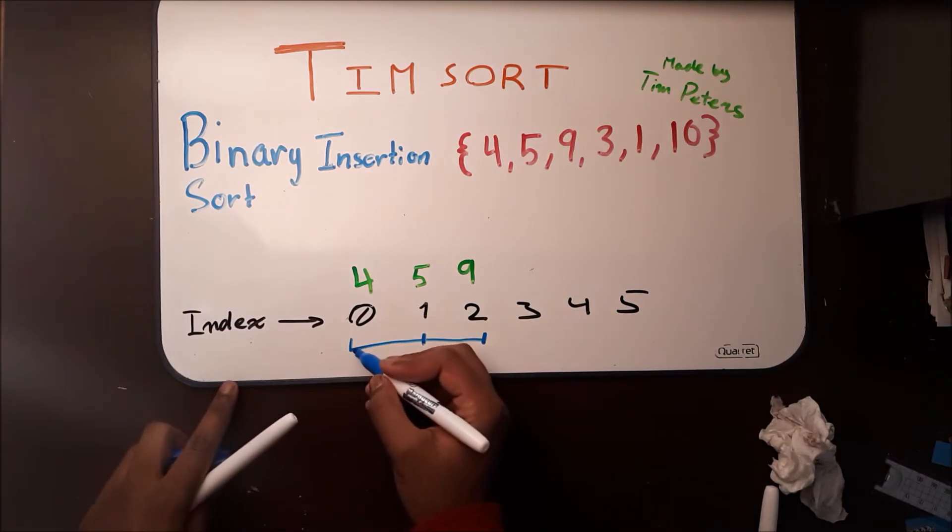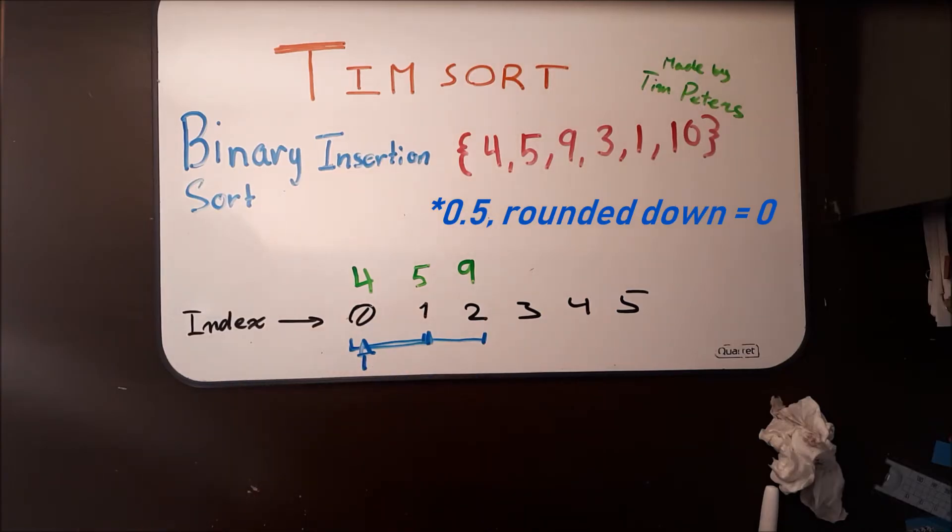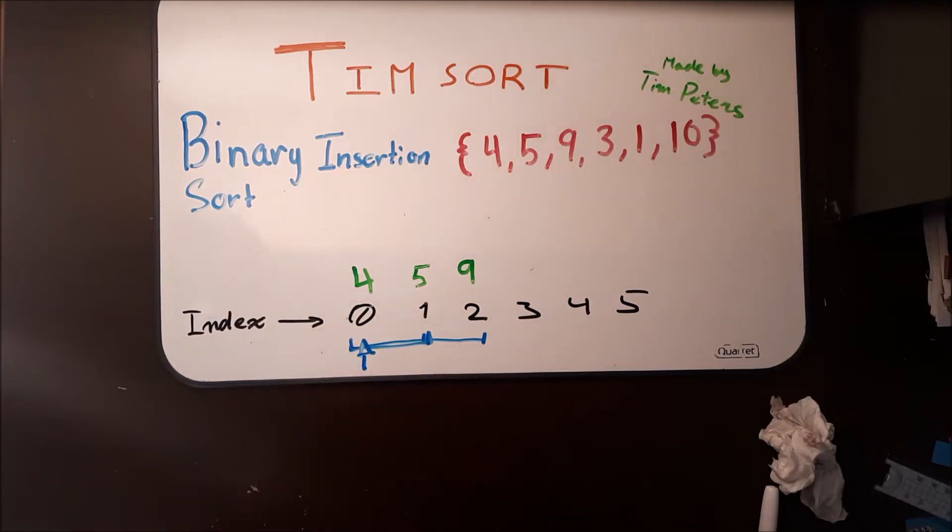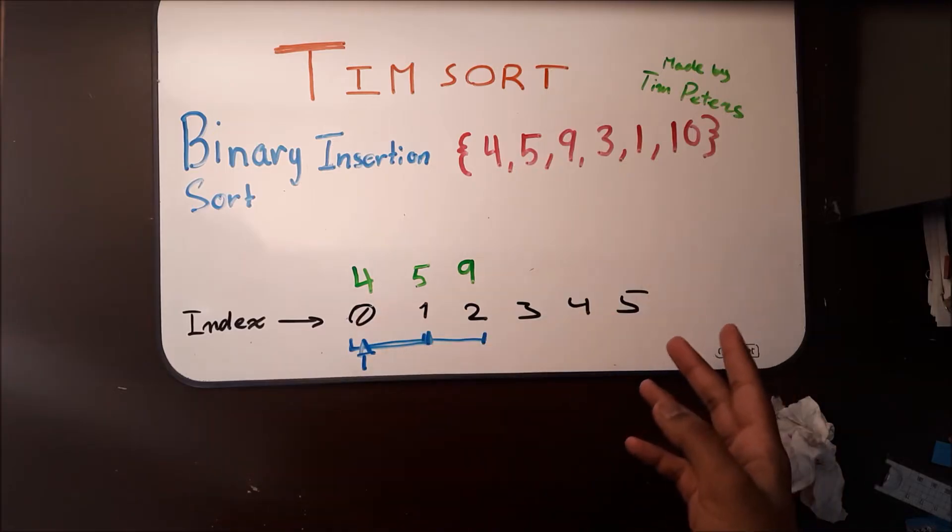So now we're going to take a look at these two elements, and look at the middle, which is going to be 0. At this index, we can see that 3 actually belongs to the left of 4, but we've run out of array. So we're going to have to put 3 at index 0 and move everything else to the right.